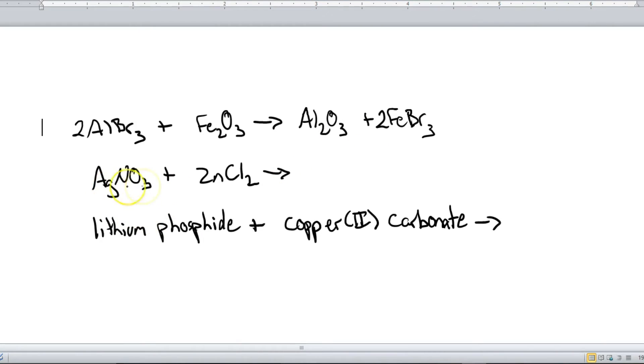Next example. We have silver nitrate and then zinc chloride. Silver is a charge of plus one. Nitrate is negative one. Zinc is plus two. Chlorine is negative one. And as before, the positive ion here is going to bond with the negative ion over here. So that is going to be AgCl, because silver is plus one, chlorine is negative one, they already add up to zero. And then zinc is the positive ion here with a charge of plus two. And then nitrate over here is negative one, so plus Zn(NO3)2.